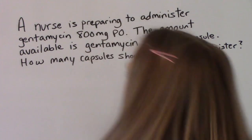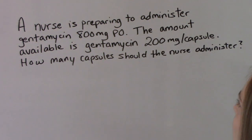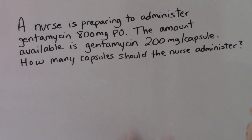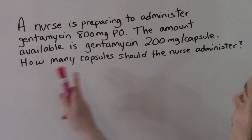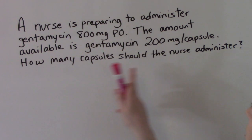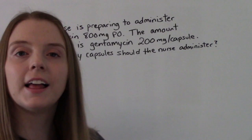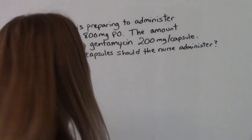Question number three. A nurse is preparing to administer gentamicin 800 mg PO. The amount available is 200 mg capsules. How many capsules should the nurse administer? Now let's work it out together.